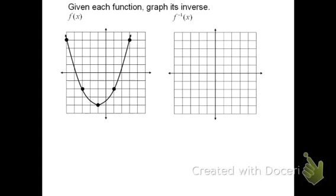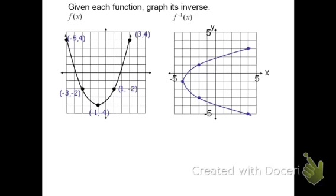For instance, the coordinate on the upper left is (−5, 4). The inverse switches inputs and outputs, giving the point (4, −5). I plot that on the other graph: over 4, down 5. Next, (−3, −2) becomes (−2, −3). Then (−1, −4) becomes (−4, −1). Then (1, −2) becomes (−2, 1). And (3, 4) becomes (4, 3). Connecting these points, the parabola appears turned sideways. In this case, the inverse is not a function because it doesn't have a one-to-one relationship — there is not one output for every input.